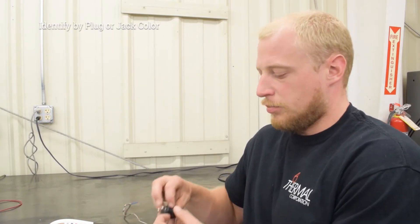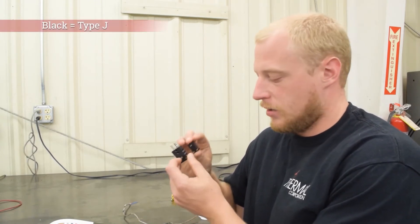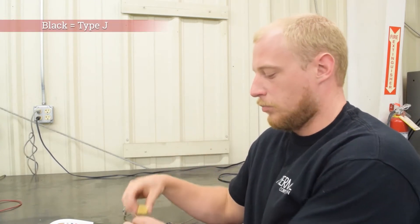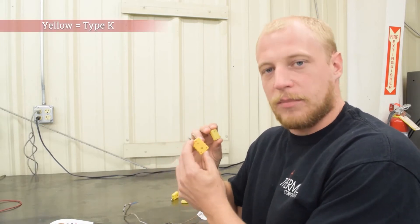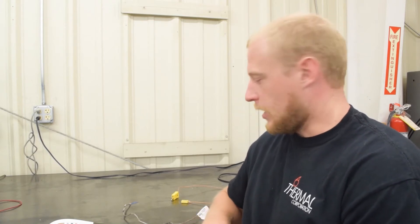So the first indicator is going to be the plug or jack color. Black is going to be a type J thermocouple. You see a yellow plug and jack, that's going to be a type K thermocouple. Blue is going to be a type T thermocouple and white is going to be not a thermocouple but an RTD and we'll discuss those in a later video post as something completely different. So that's your first indicator.